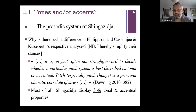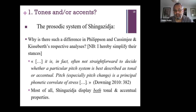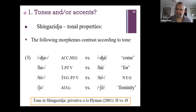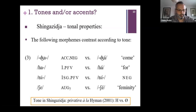For some researchers, Japanese is a pitch-accent language; for others like Larry Hyman, it is clearly tonal. So it's not always easy to decide. Shingazija has some properties that bring it toward tonal languages, and some properties that bring it toward accentual languages.